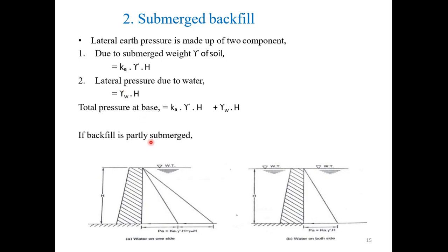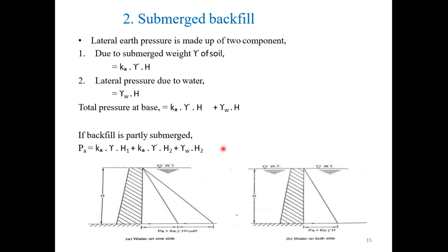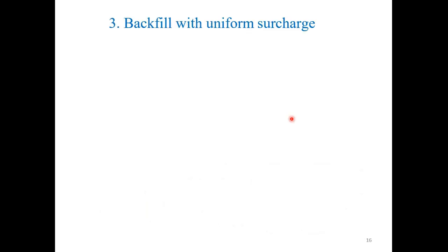In case the backfill is partially submerged, you find the pressure using the empirical formula: Ka × γ × H₁ + Ka × γ' × H₂ + γ_water × H₂. By this equation you can find out the lateral earth pressure acting on the retaining wall.